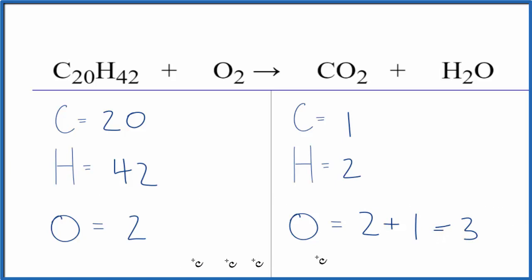We're going to leave the oxygens till last. That's a good strategy with combustion reactions. Start with the carbons. We can put 20 as our coefficient here. One times 20—that balances the carbon atoms.